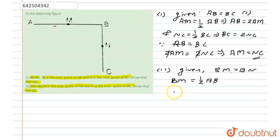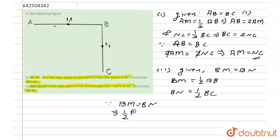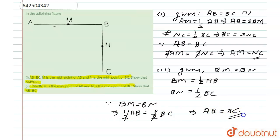And since we know that BM is equal to BN, as given in the question, writing BM as half of AB and BN as half of BC, the halves cancel out and we are left with AB is equal to BC. And this is the proof of the second part.